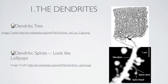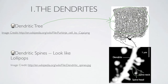Let's describe the structure of a neuron in a little more detail. The dendrites are these little branches, and all the dendrites together make up what we call the dendritic tree. On them, the dendrites have little protrusions that resemble forests of lollipops. These are the dendritic spines.